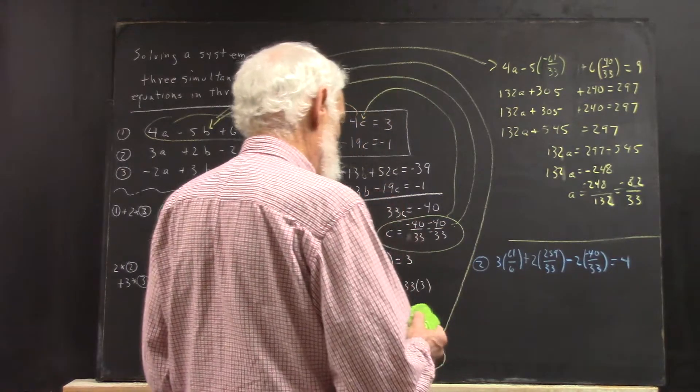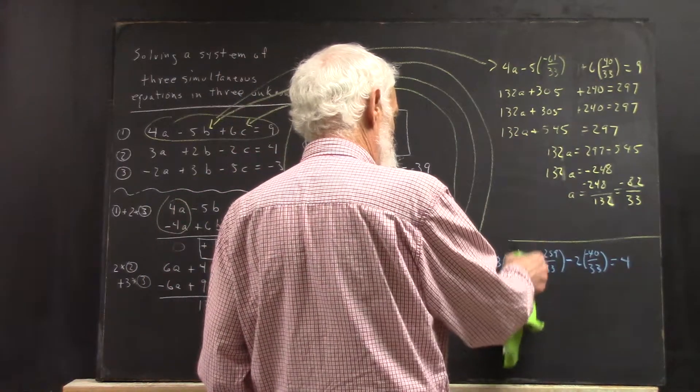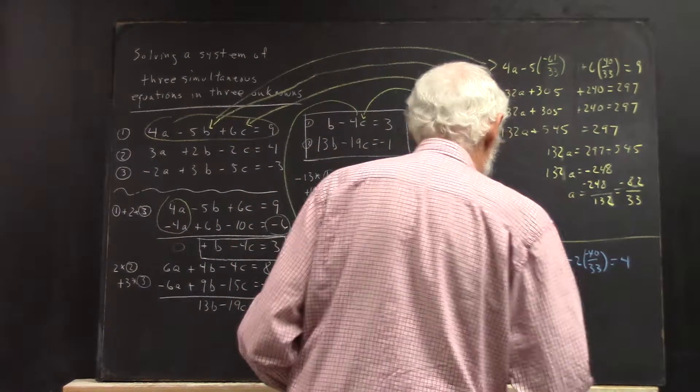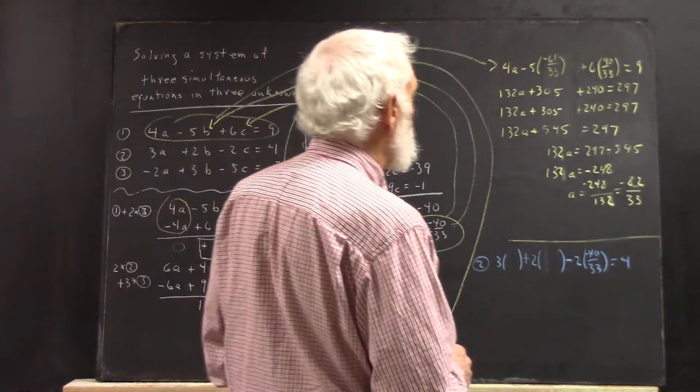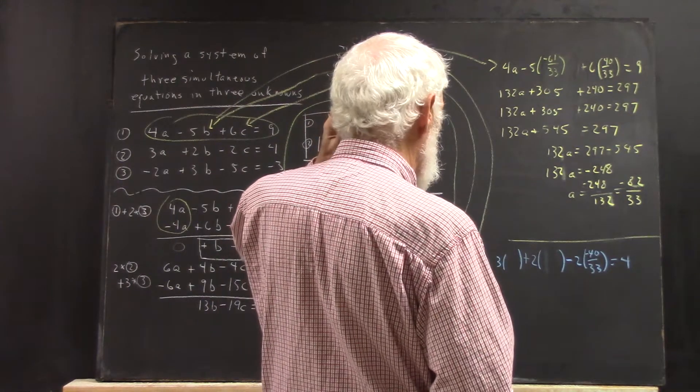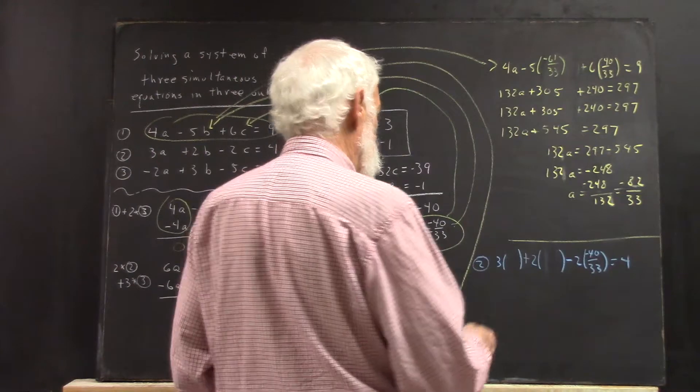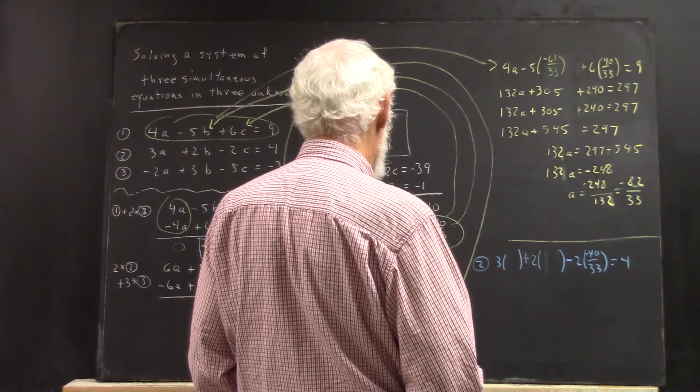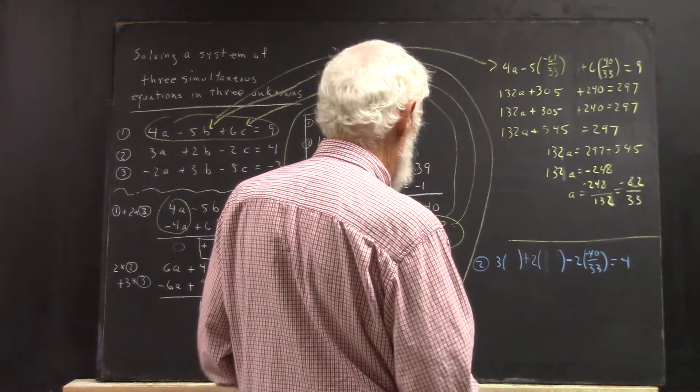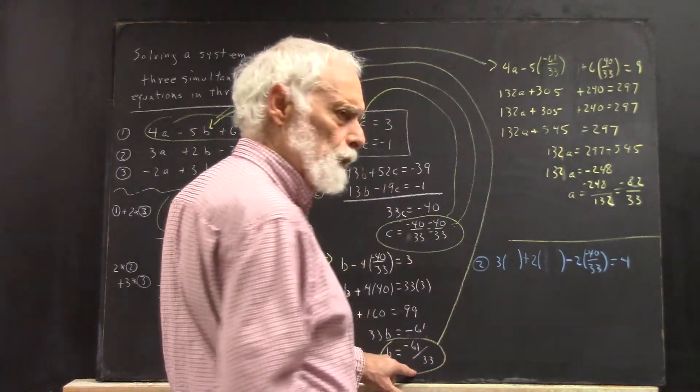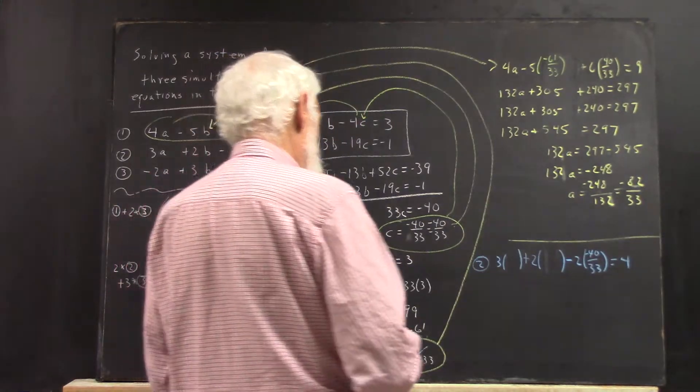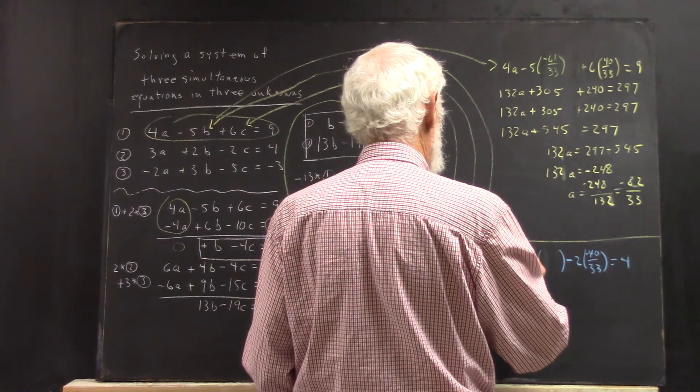And then I can insert slightly better numbers over here. My value of b would be... I think I was substituting negative 61 over 33 for my value of a. So this should be negative 61 over 33 here.